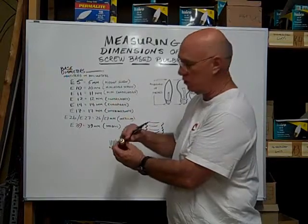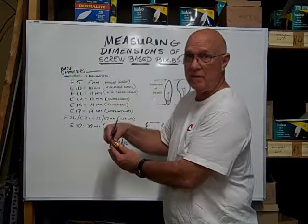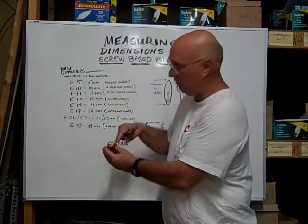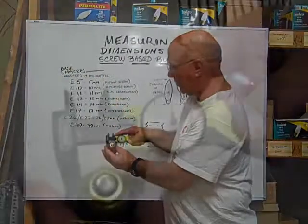Now you don't want to measure the circumference. A lot of people want to wrap a tape measure around and measure the circumference. You want to measure across, left to right, of the outer diameter of the thread.